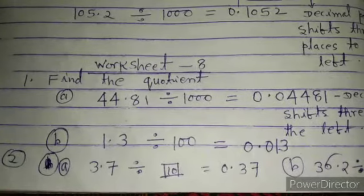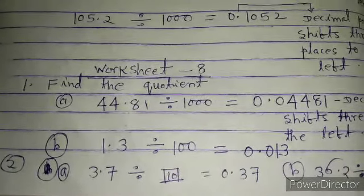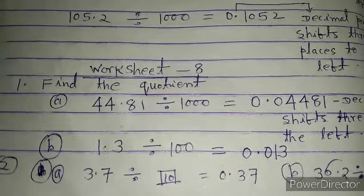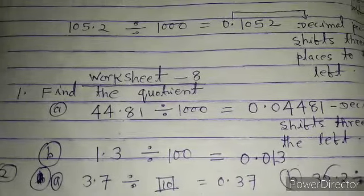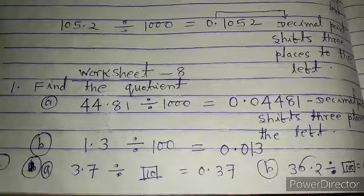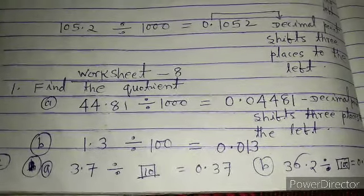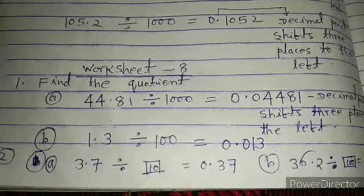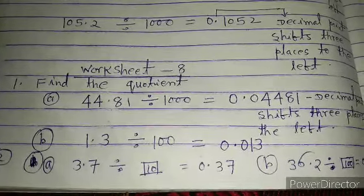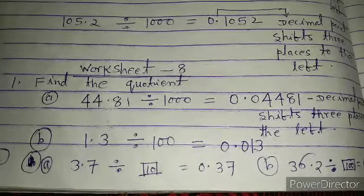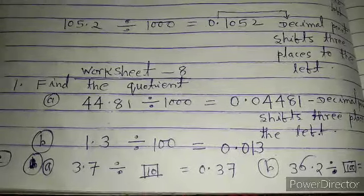Now we solve some worksheet questions. Question 1: find the quotient. 44.81 ÷ 1000 = 0.04481. Since there are three zeros, the decimal point is shifted 3 places to the left. As there are only 2 digits to the left, we add a zero to make up 3 places.